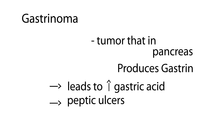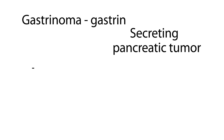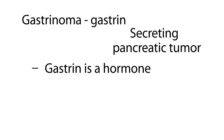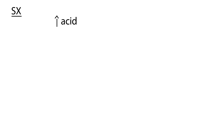So that's the most brief summary of ZE syndrome. A gastrinoma, as the name implies, is a gastrin-secreting tumor found in the pancreas. Gastrin is a very important hormone that stimulates the secretion of gastric acid, which is secreted by the parietal cells inside the stomach. Excess acid produced because of the excess gastrin leads to stomach ulcers and, in particular, peptic ulcer disease.